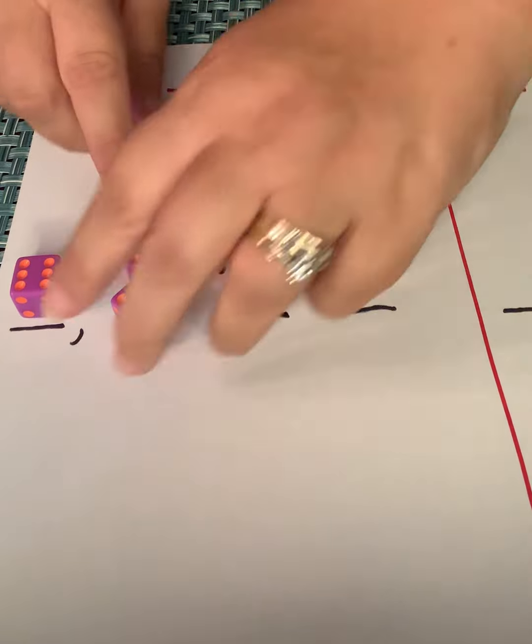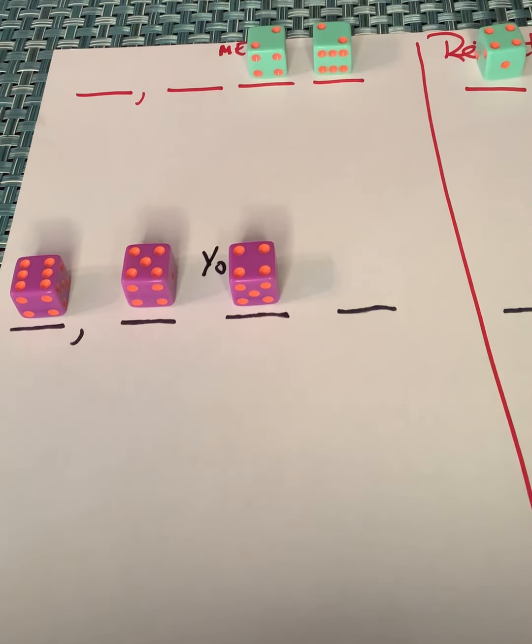All right. So then my son rolls. Oops, sorry. He rolls a four. Of course, that's a nice number. So he puts it in his tens column.